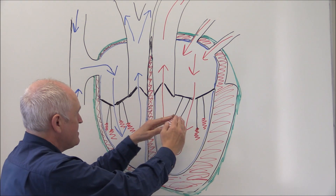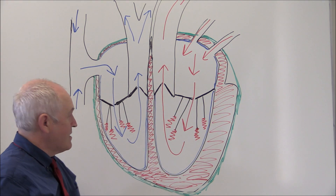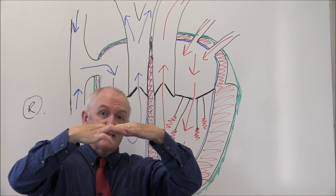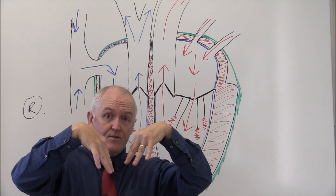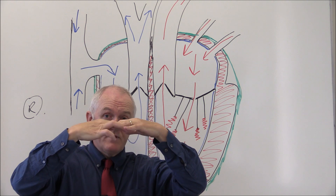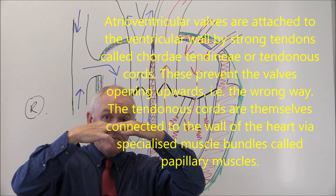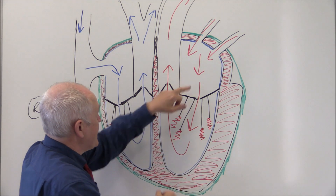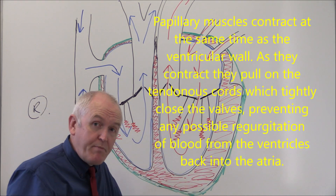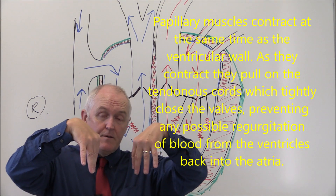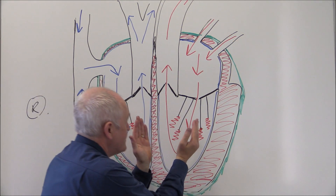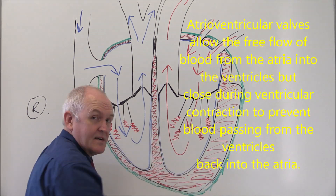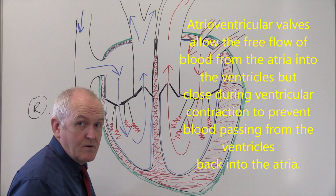When the pressure increases, because this atrioventricular mitral valve is pointing downward, the increase in pressure in the ventricle below is going to slam that valve shut. So it opens downward then slams shut. It can't open up into the atria because the tendinous cords and the papillary muscles stop it. So it will passively move down, the ventricle will contract, and the increase in pressure of the blood in the ventricle will slam that valve shut, preventing regurgitation into the atria, which would be a pathological situation.